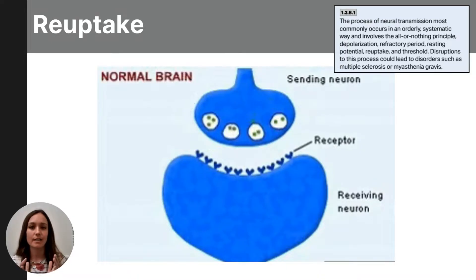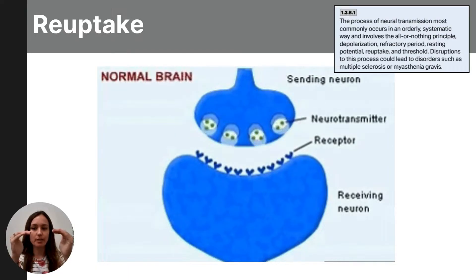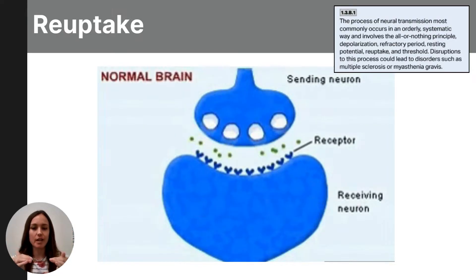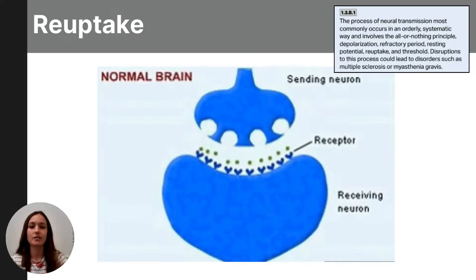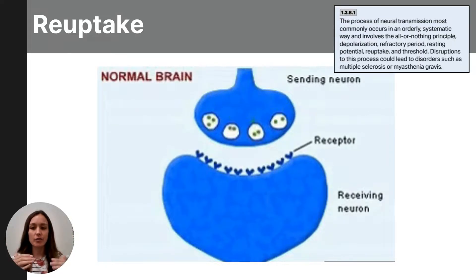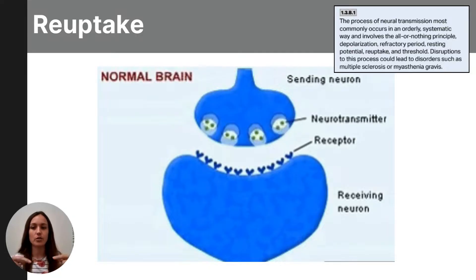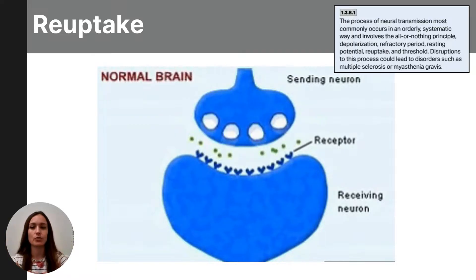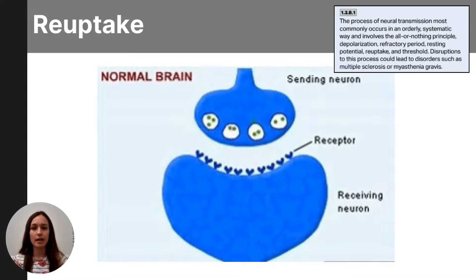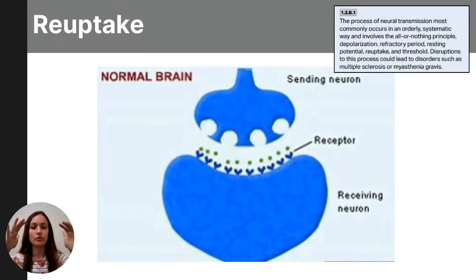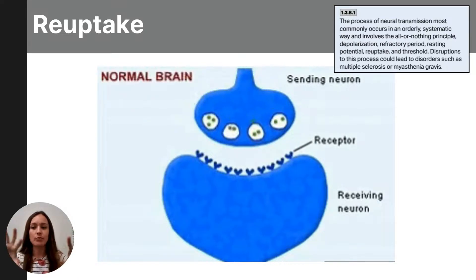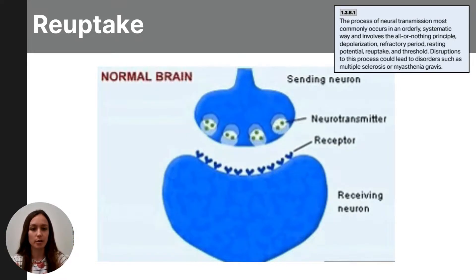The last step in the process is called reuptake. After the message is sent into the neighboring neuron, those neurotransmitters are reabsorbed back into the original sending neuron through reuptake, allowing them to be reused for future messages. Any remaining neurotransmitters in the synapse are then cleaned up by glial cells or broken down by enzymes.